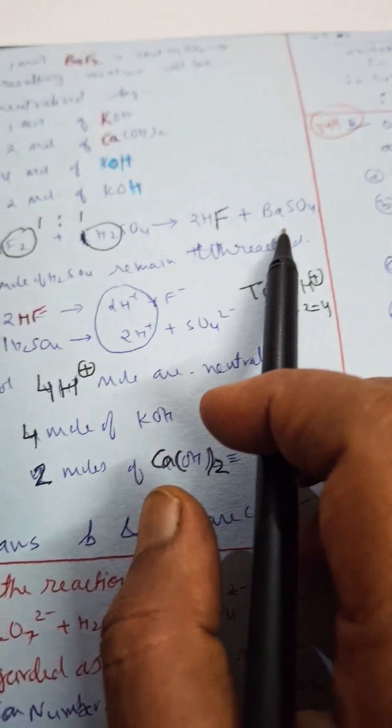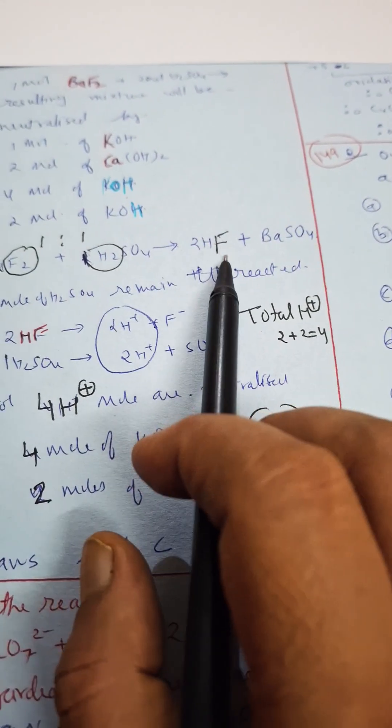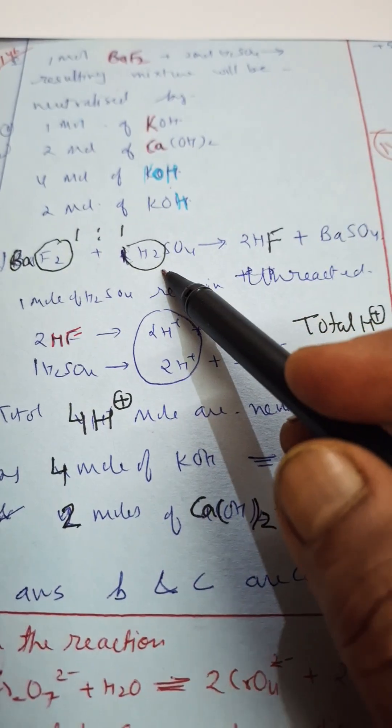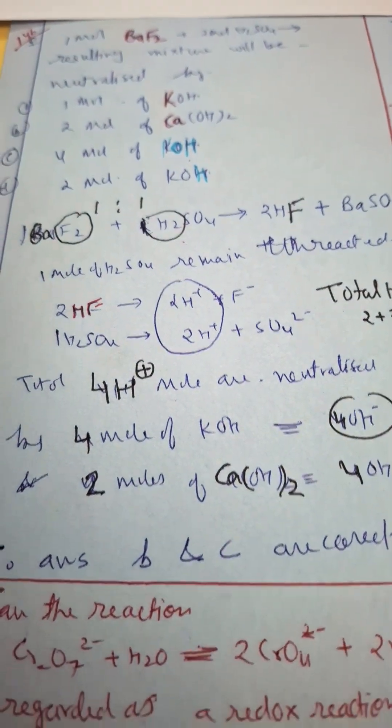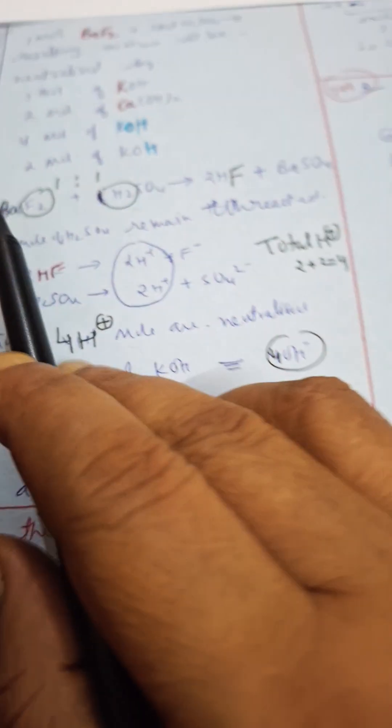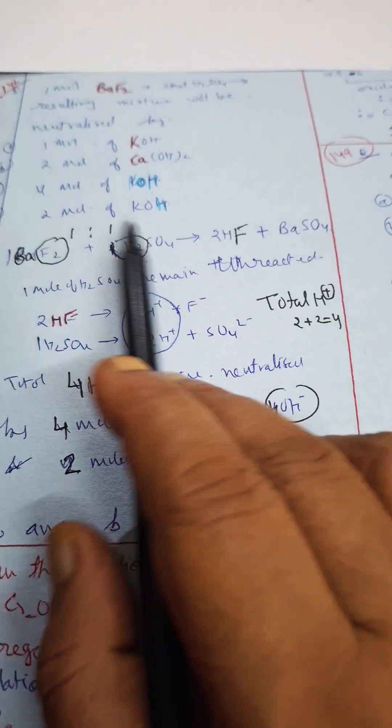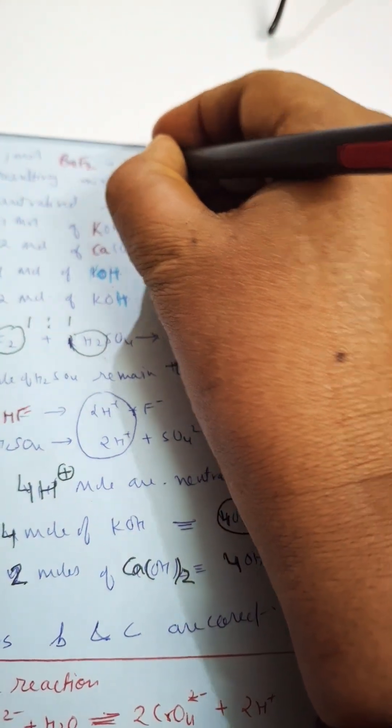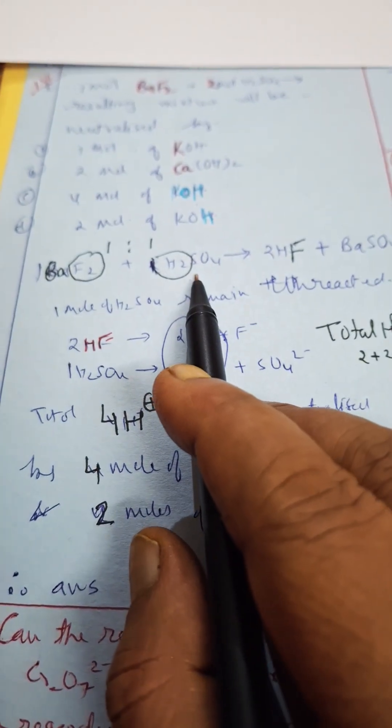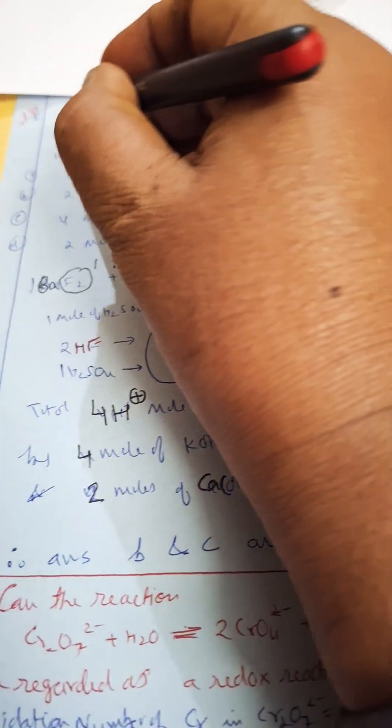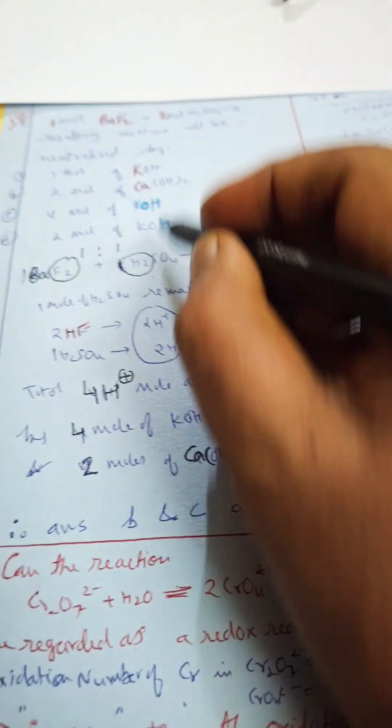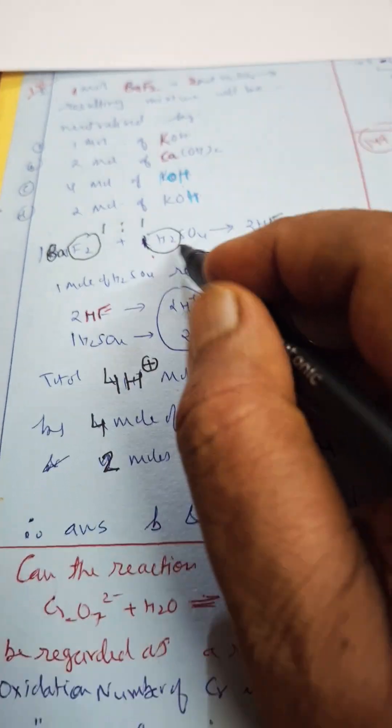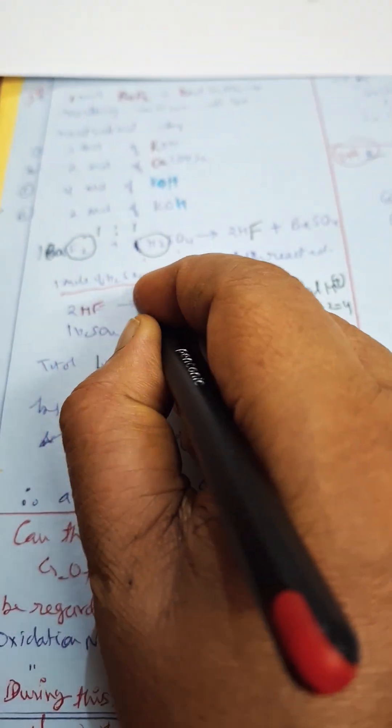We have to work this out completely and they are asking if the resulting product will be neutralized. In this case we will see that BaF2, here one to one ratio is there. They have given two moles of H2SO4, so one is to one ratio is there. So here it is one mole and it is two moles, so one mole of H2SO4 is excess, the excess reagent.